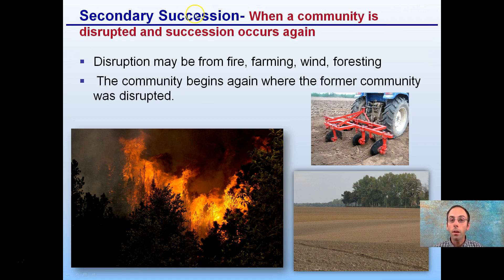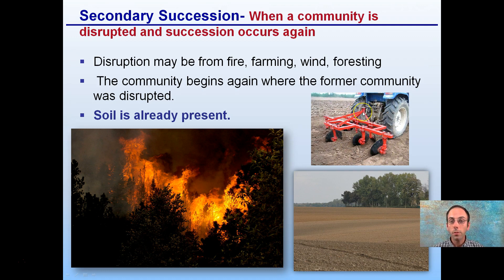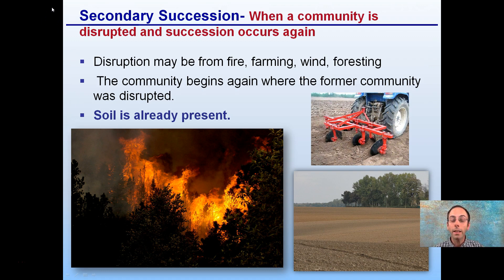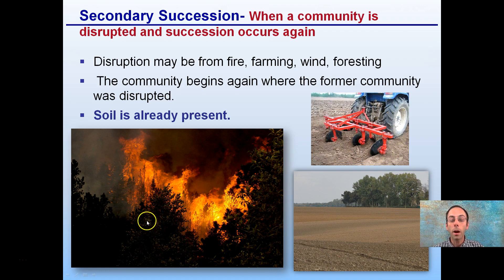Secondary succession is when a community is disrupted and succession occurs again. This disruption could be from fire, farming, or forestry. The community begins again where a former community was disrupted. The key feature of secondary succession is the presence of soil — if soil is already present, as in these three cases shown, that is secondary succession. Remember, primary succession starts with bare rock or sand.